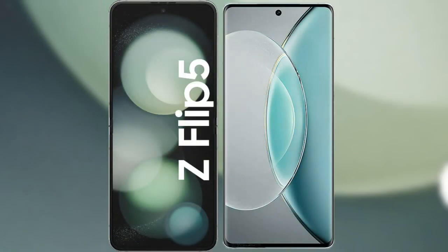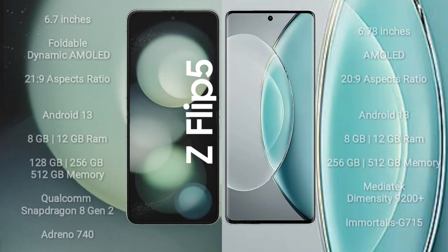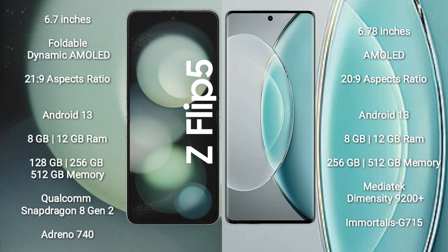I will compare the new Samsung Galaxy Z Flip 5 with Vivo X90s. Samsung Galaxy Z Flip 5 comes with a 6.7-inch foldable dynamic AMOLED display and aspect ratio 21x9. Vivo X90s comes with a 6.78-inch AMOLED display and aspect ratio 20x9.